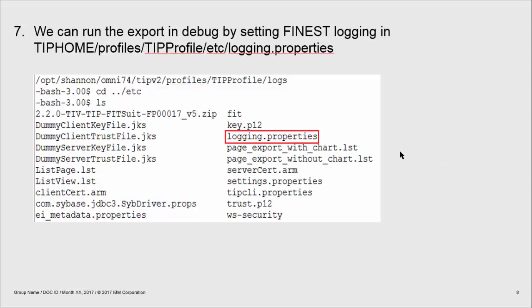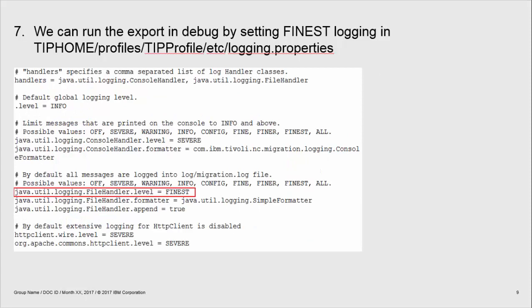You can run the export in debug mode by setting finest logging in tip home profiles, tip profile etc. logging.properties. The property java.util.logging.filehandler.level is the property that you need to set.